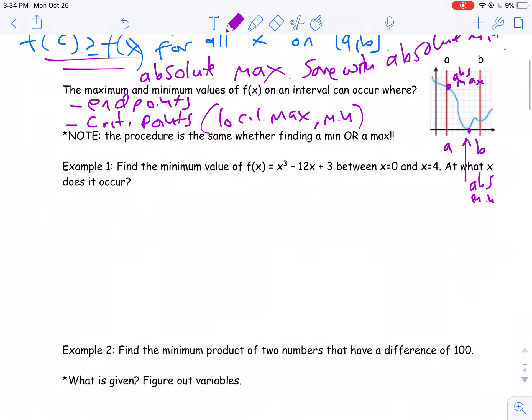And what you're going to see is that all these problems kind of follow the same strategy. Basically, you're just going to check the endpoints, check the critical points, and plug them in to find which one's the biggest. So let's look at a relatively straightforward example. Find the minimum value of x cubed minus 12x plus 3 between 0 and 4, so that's your a and your b, at what x does it occur?